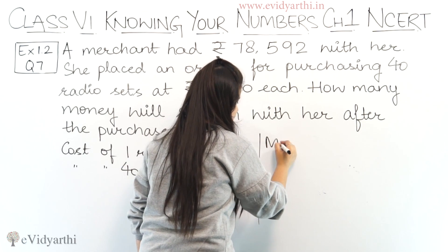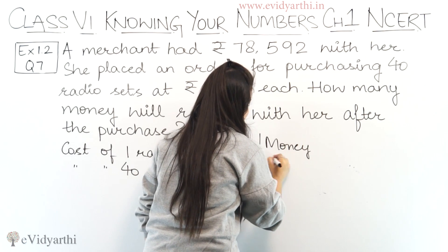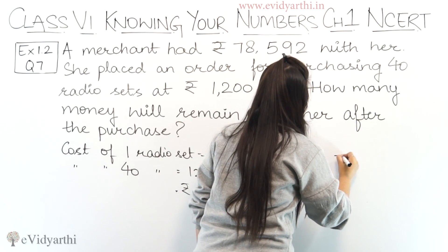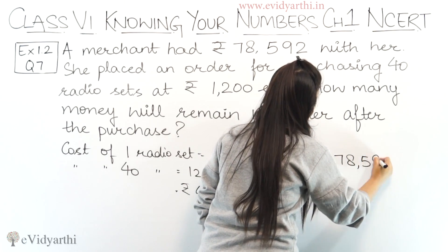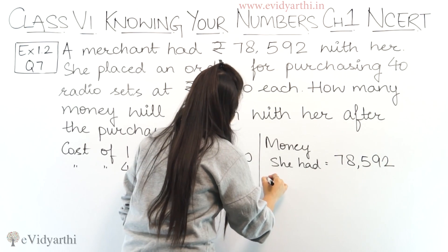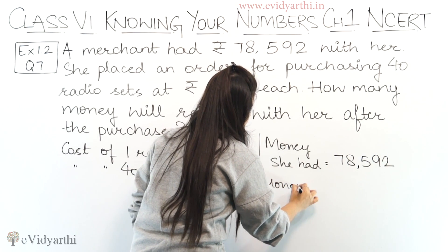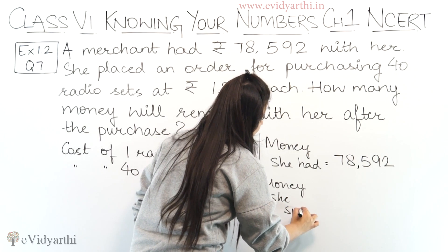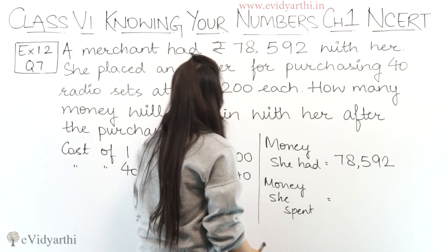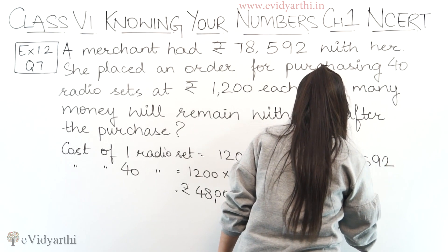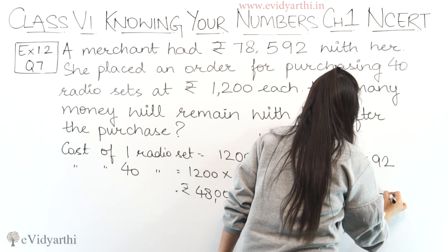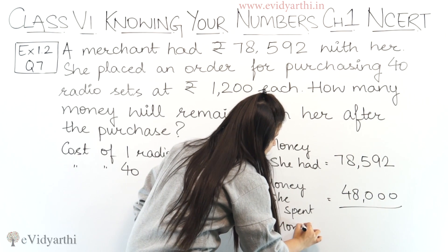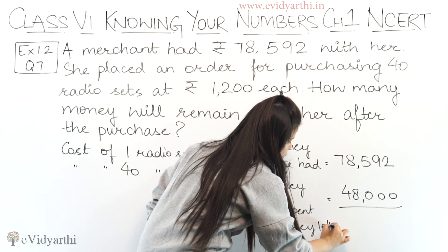So money she had: how much money did she have? That is 7, 8, 5, 9, 2 — Rs. 78,592. And then money she spent — she spent Rs. 48,000 on this purchase. That is 48 and this will be 1000. That will be the money left with her.